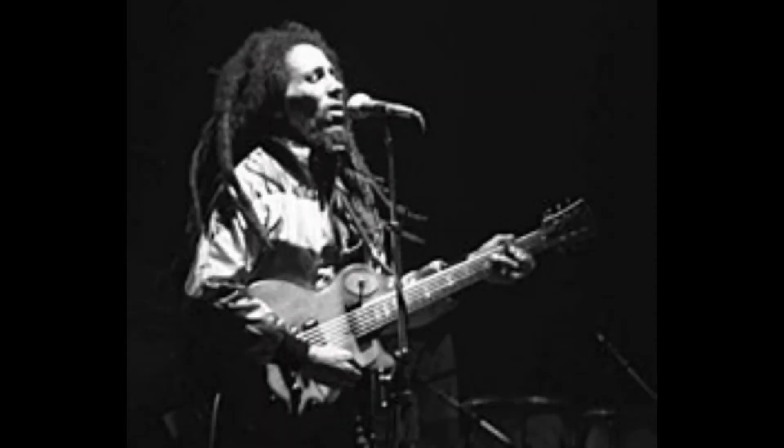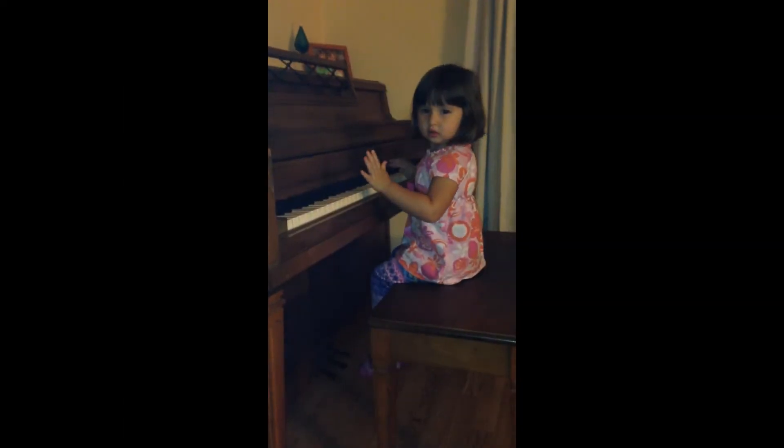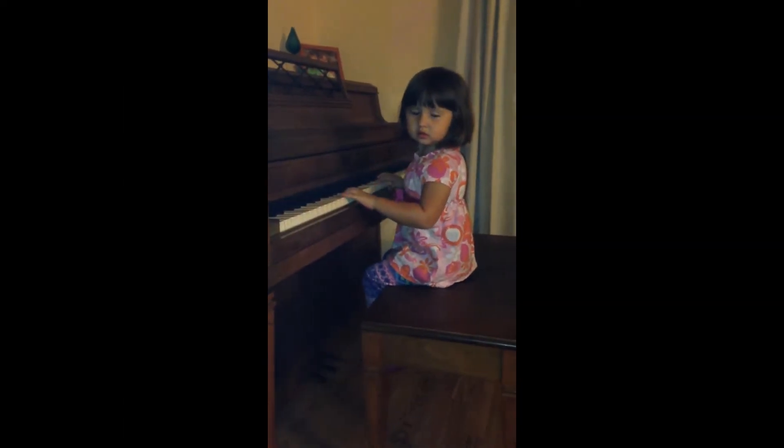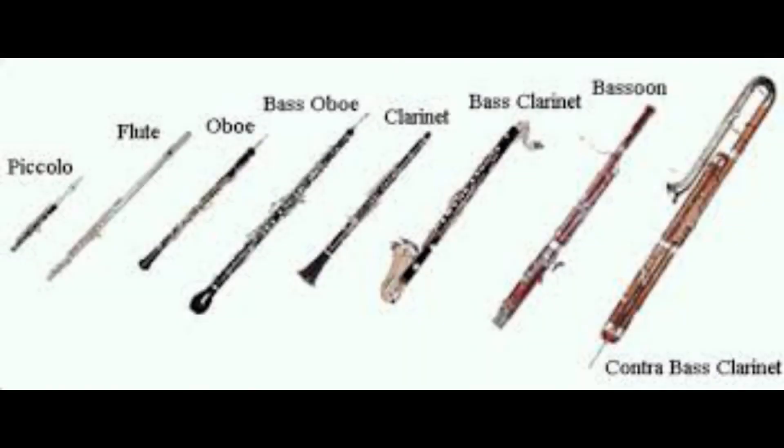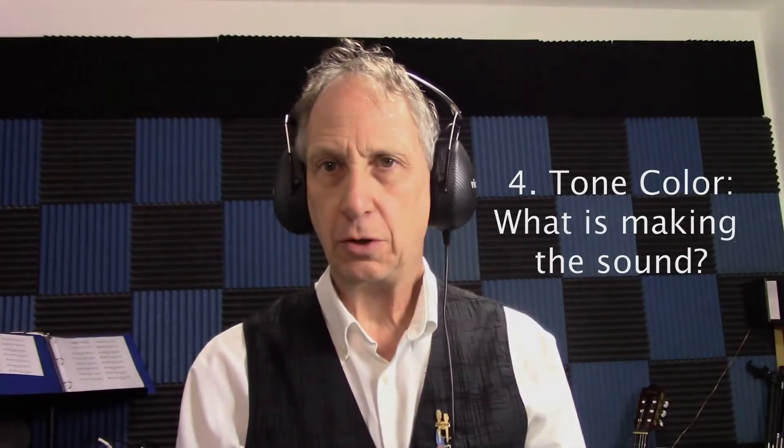Finally, something has to be making the sound. Is it your voice? Is it a guitar? Is it a piano? What kind of voice do you have — are you a tenor, are you a soprano? What kind of soprano are you? There are different kinds of sopranos. Is it being played on a flute? Is it being played on a clarinet? What's the difference in clarinet sounds? There's a bass clarinet and an alto clarinet. This is called tone color — something has to be making the sound.